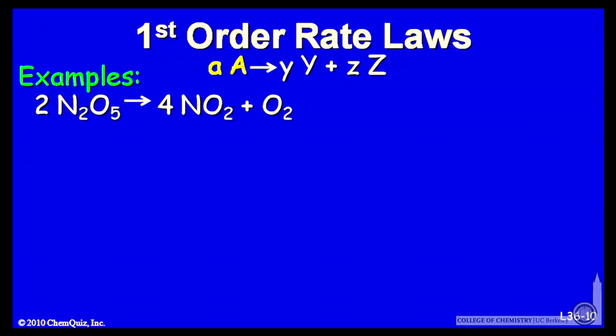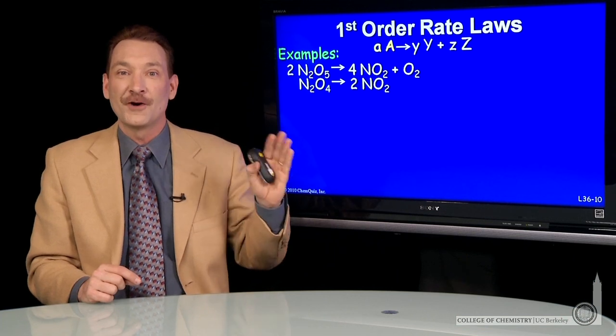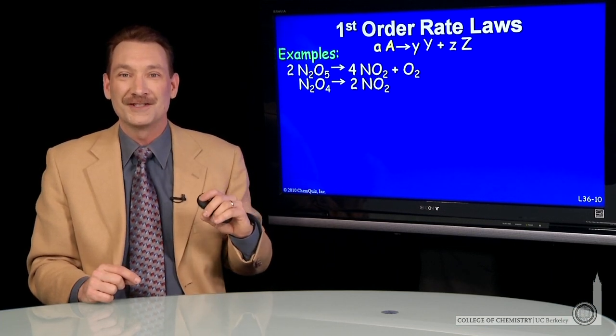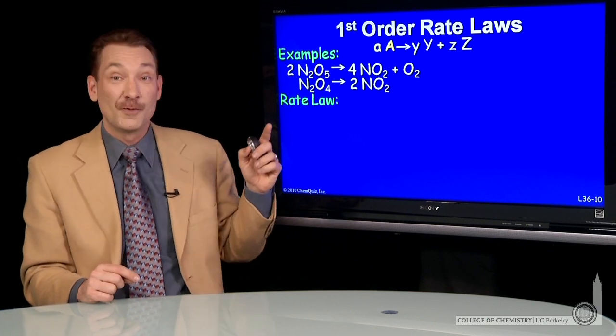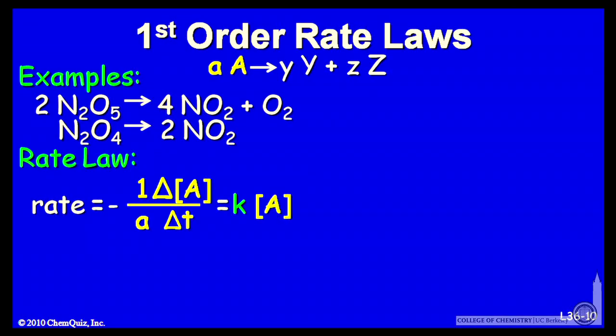Let's look at a couple examples. Here's N2O5 decomposing into NO2 and oxygen, and N2O4 decomposing into two NO2 molecules. Both of these are first order chemical reactions in kinetics. Their kinetics are such that if I write the rate law, the change in concentration over the change in time is directly proportional to the concentration to the first power.